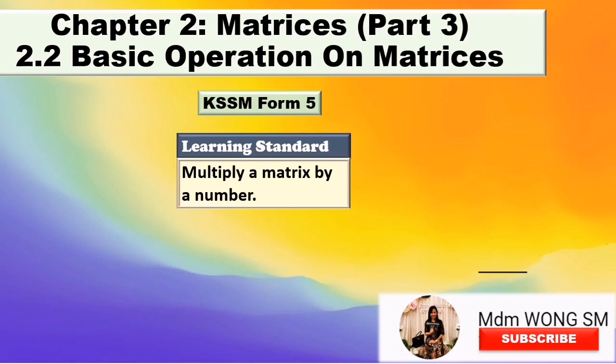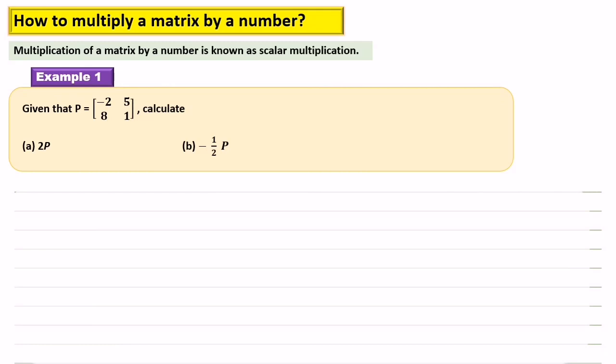In previous video, you learned how to add and subtract matrices. In this video, I'm going to teach you how to multiply a matrix by a number. Multiplication of a matrix by a number is known as scalar multiplication. Let us look at example 1.